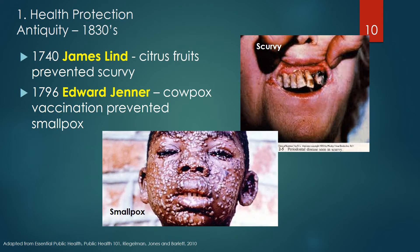In 1740, a British naval commander, James Lind, discovered that providing sailors with lemons and other citrus fruits during long voyages prevented scurvy. The picture shows the bleeding gums and periodontal problems associated with scurvy. He was providing vitamin C even though vitamins had not yet been identified.